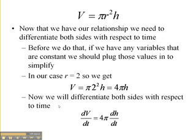So differentiating both sides with respect to time, we get dV/dt equals, 4π is just a constant, and the derivative of h with respect to time is dh/dt.